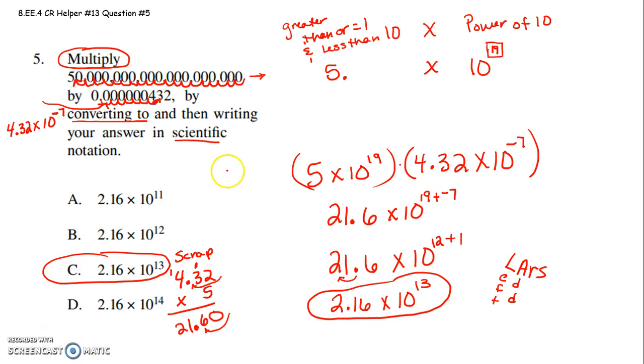There was a lot to this problem. Remember that when you have really big numbers, the power on 10 is a positive exponent. When you have teeny tiny numbers, you have a negative exponent. When we multiply numbers in scientific notation, you multiply those first factors, keep the base 10, add those exponents. And then if you're at 21.6, you've got to put it back in scientific notation using your Lars left add rule. I hope that helps.